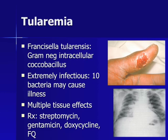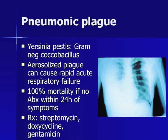Tularemia is caused by Francisella tularensis, a gram-negative intracellular coccobacillus. It has six clinical forms including an ulceroglandular form. The bioterrorist threat comes from the pulmonic form, which is clinically indistinguishable from a severe pneumonia. Tularemia is extremely infectious — only ten bacteria are enough to cause clinical illness. Although mortality is low, morbidity in an outbreak would be high. Treatment involves an aminoglycoside, doxycycline, or fluoroquinolone. Pneumonic plague is caused by Yersinia pestis, a gram-negative coccobacillus. Aerosolized pneumonic plague can cause rapid acute respiratory failure. The mortality of pneumonic plague is 100% if no antibiotics are given within 24 hours of onset. Treatment involves streptomycin, doxycycline, or gentamicin.